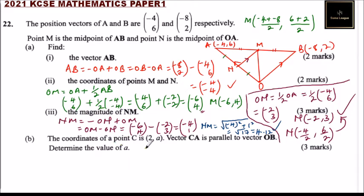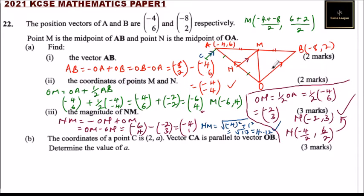Now part B: the coordinates of C are (2, a), and vector CA is parallel to vector OB. So CA is parallel to OB. We are told to determine the value of a.